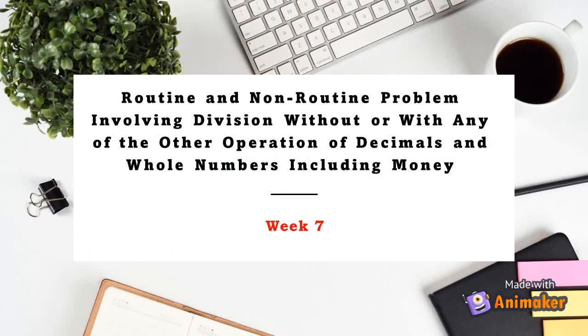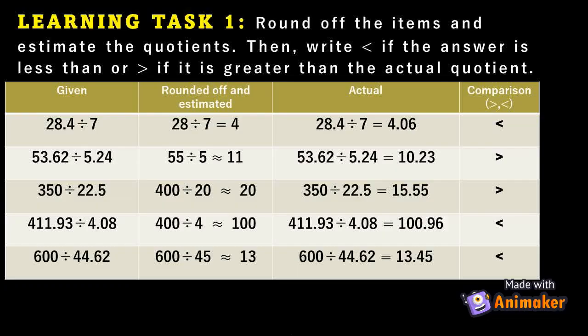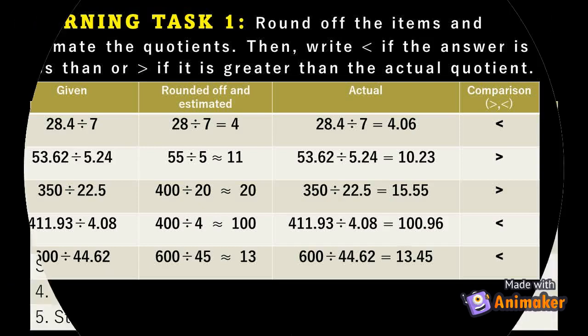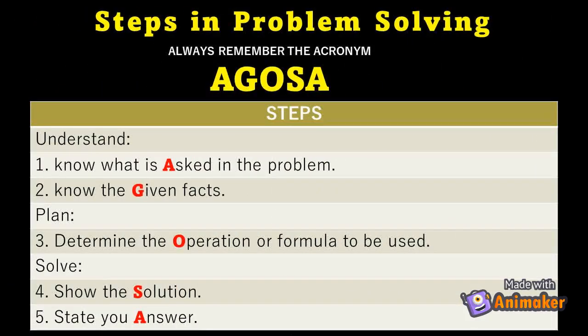We will cover decimals and whole numbers including money. Problem solving is somewhat easy if you follow the steps on how to solve them. Let's have a review first — Learning Task Number One: round off the items and estimate the questions, then write the less than symbol if the answer is less than, or greater than symbol if the answer is greater than the actual quotient.